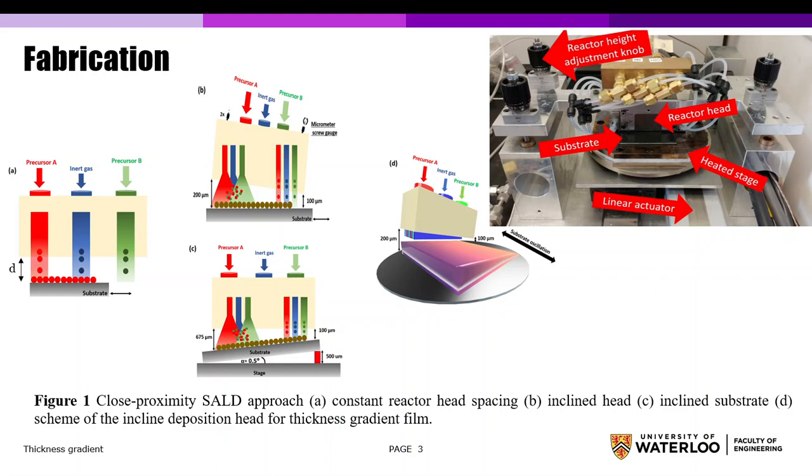Thickness gradient film can be obtained by using different spacing to allow more mixing of gases at higher spacing, getting thicker film at higher space. This occurs by tilting the reactor head as shown in Figure B, or by tilting the substrate as shown in Figure C.